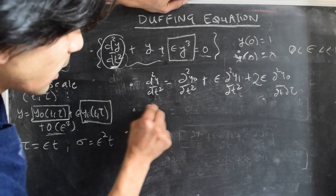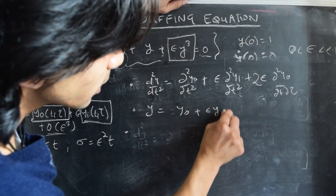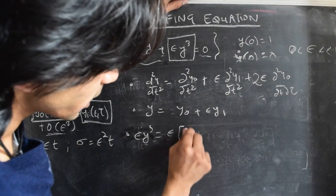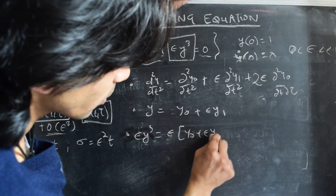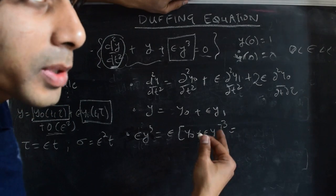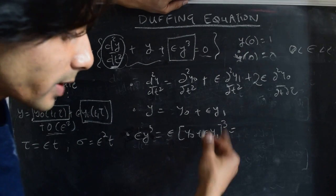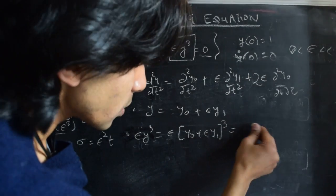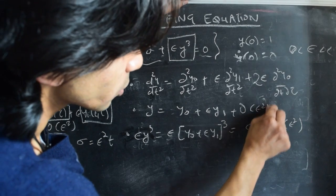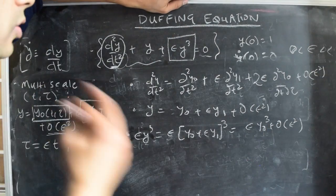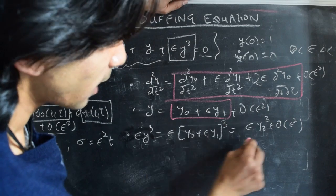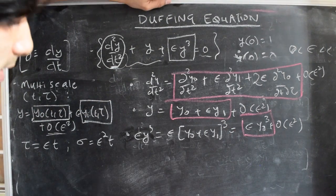Then we have y = y0 + ε·y1 to order ε. And we have the cubic term ε·y³, which is ε·(y0 + ε·y1)³. When we cube this, we get y0³ plus all other terms that carry some power of ε, which we can ignore. So to order ε, we only keep the term ε·y0³. So the complete expansion has all three of these terms.